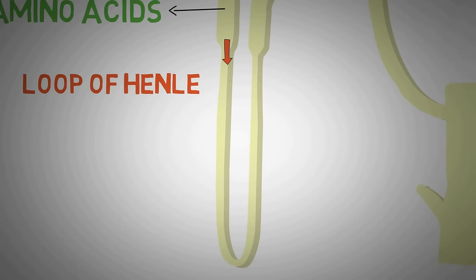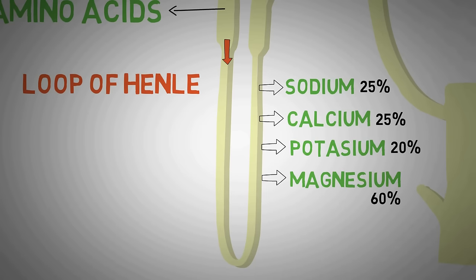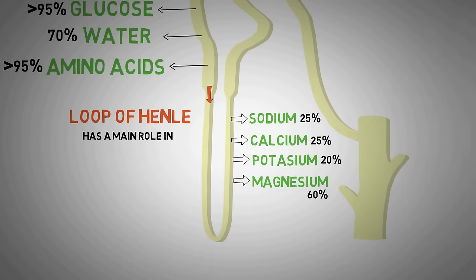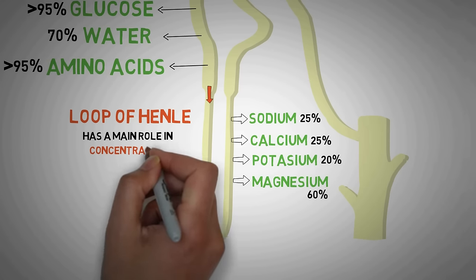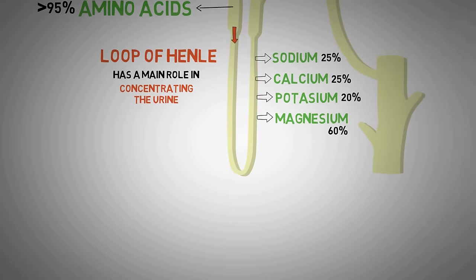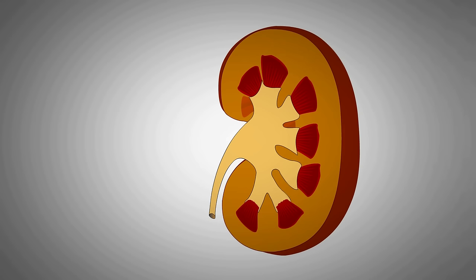Next, the filtrate passes into the loop of Henle. The loop of Henle has a role in reabsorption of important salts: about 25% of sodium, 25% of calcium, 20% of potassium, and about 60% of magnesium get reabsorbed here. But the loop of Henle has a major role in the concentration of urine — a complex topic usually taught at medical school physiology level.